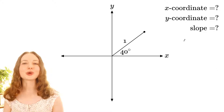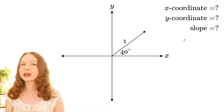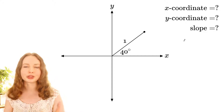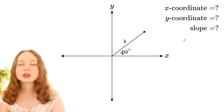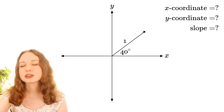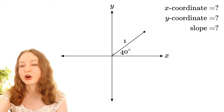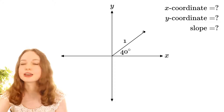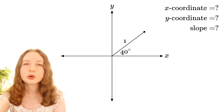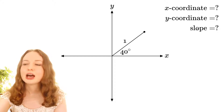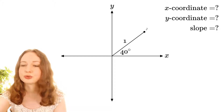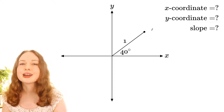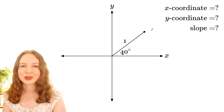I'm going to start with a question for those of you already familiar with sine, cosine, and tan - maybe you've learned SOH-CAH-TOA or something like that. If we have a point that's a distance of 1 from the origin and it's at an angle of 40 degrees, what is its x-coordinate, what's its y-coordinate, and what's the slope of this line? You might like to pause the video here and think about the answers to those questions.